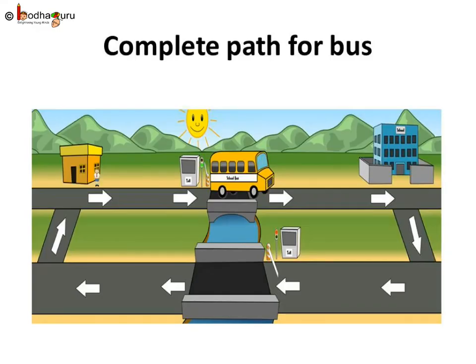In short, the school bus starts near Aman's house using bridge A, reaches the school, and after school, the bus goes back to drop Aman at his home using the bridge B.